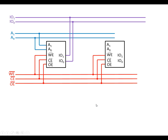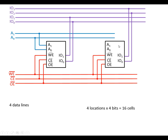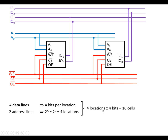Now let's look at building larger memory modules. Using two identical modules, we can store four bits per location instead of two. With the two address lines we still have four locations, but we store bits 0 and 1 in one module and bits 2 and 3 in the other. This requires four data lines — one per bit. Both modules work in parallel with the same address lines, giving four locations each storing four bits.